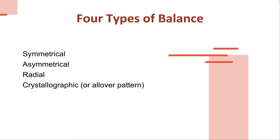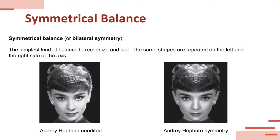There are generally four types of balance: symmetrical, asymmetrical, radial, and crystallographic, which is an all-over pattern. We'll get into the specifics of all of these.